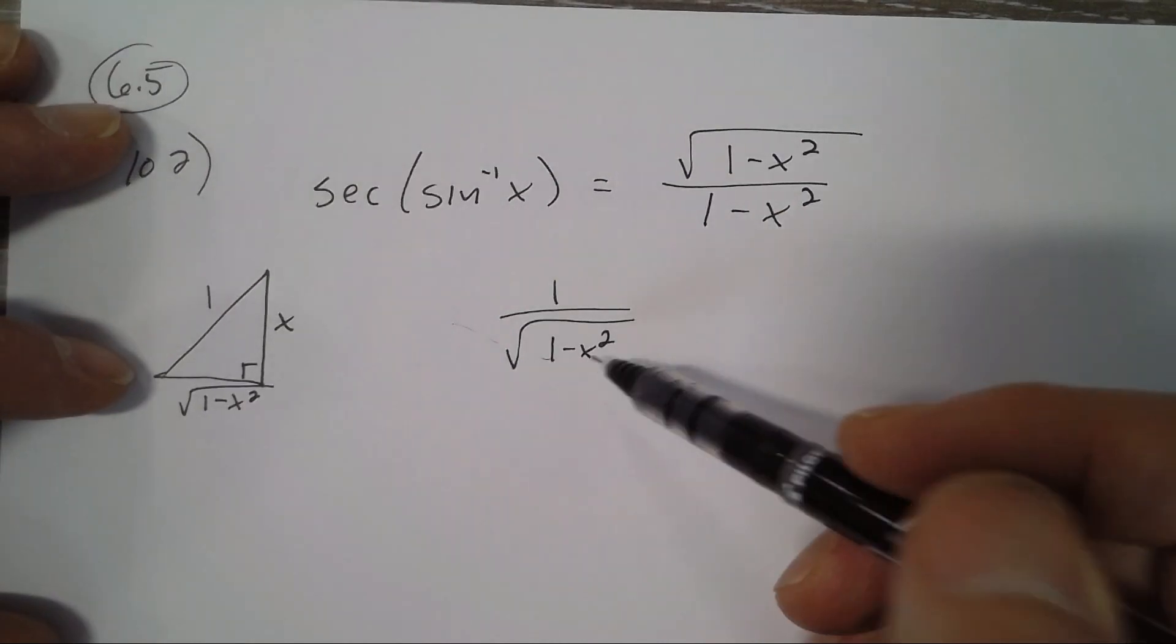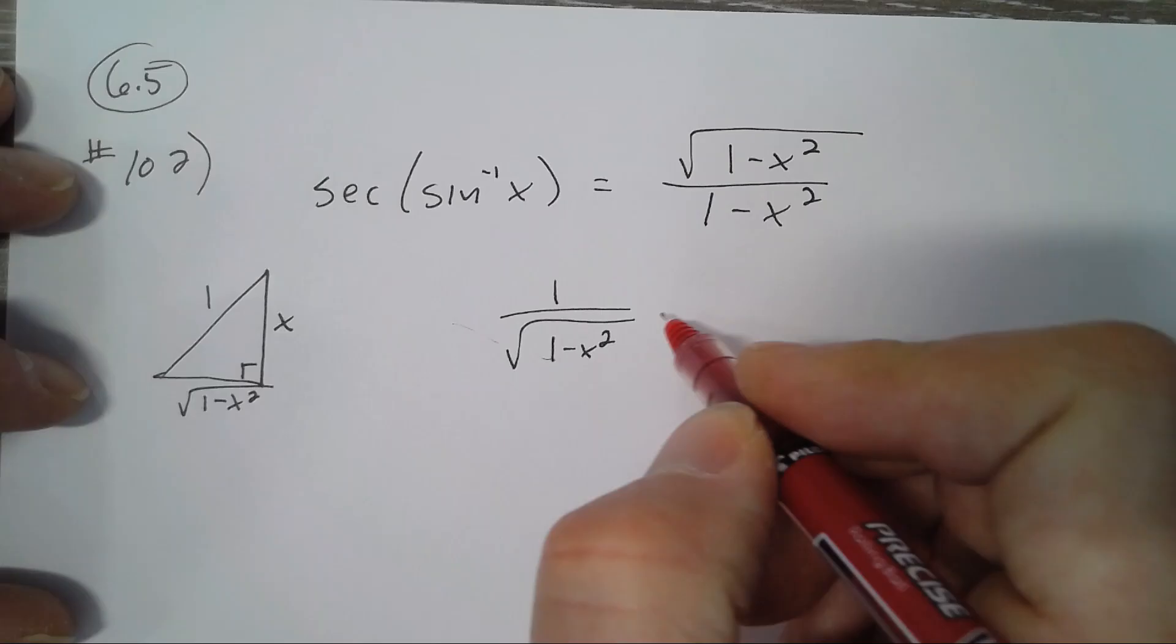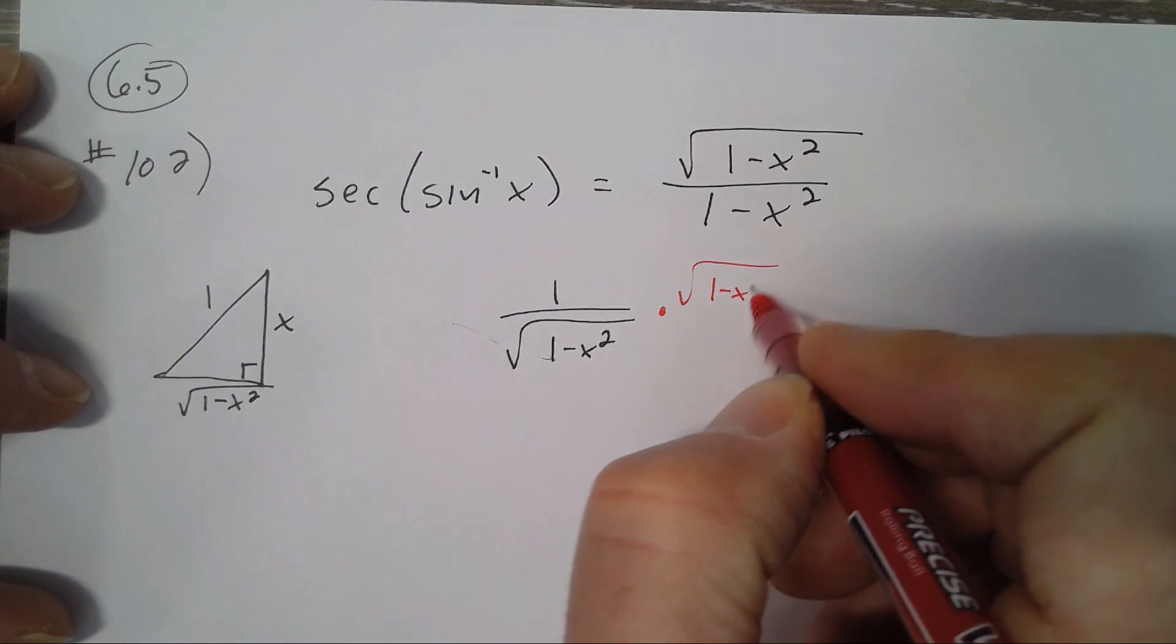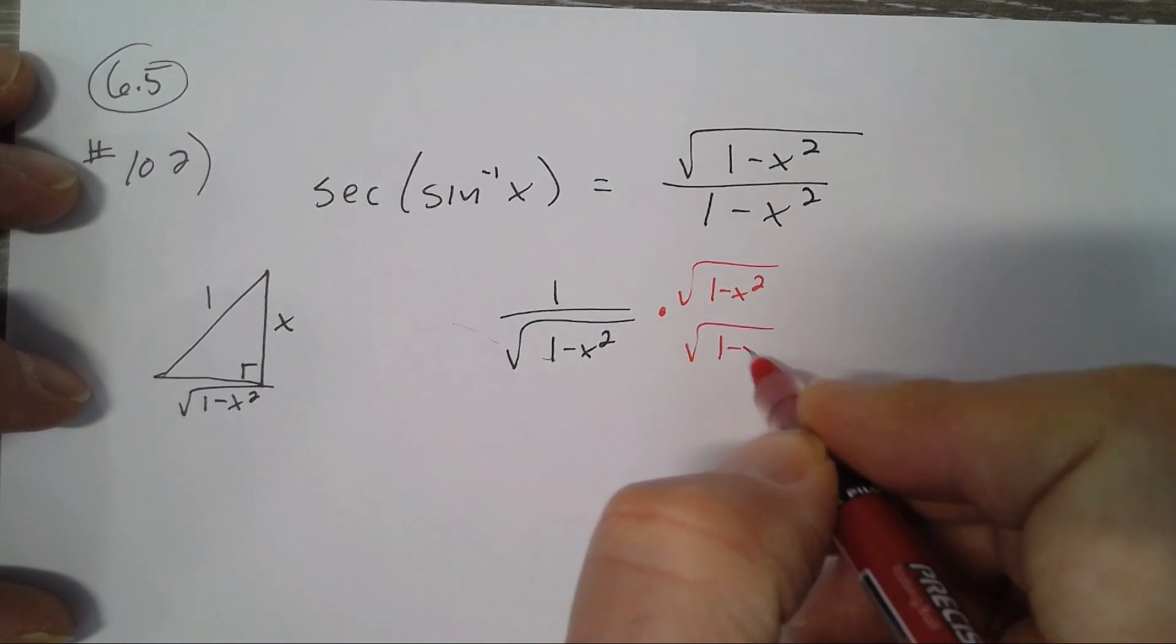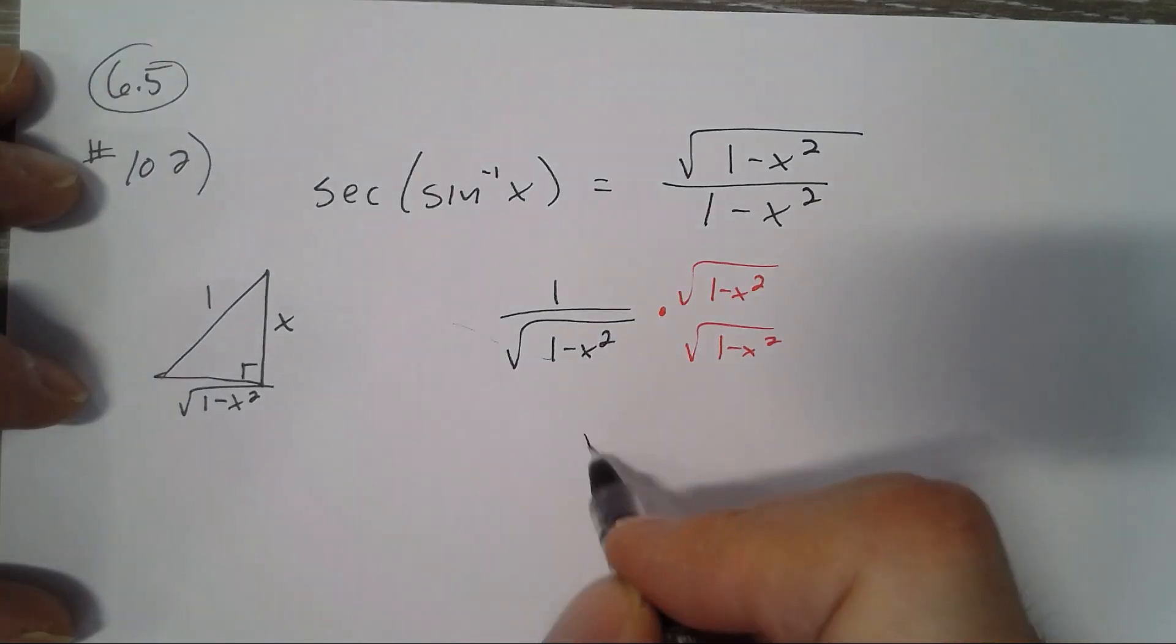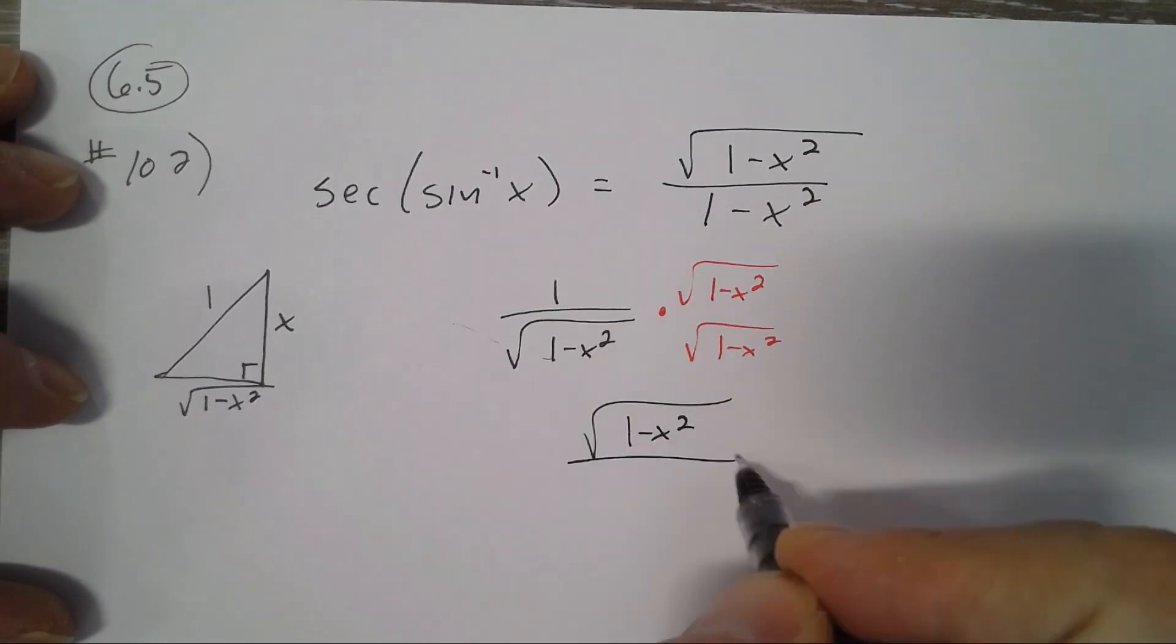So I'll multiply the top and bottom by the square root of 1 minus x squared, and I get square root of 1 minus x squared on top, and square roots go away, so it's 1 minus x squared on the bottom.